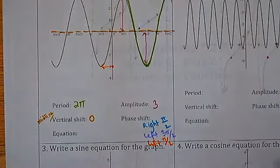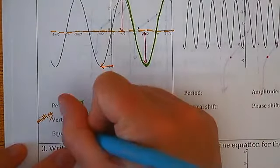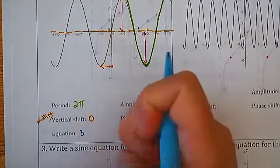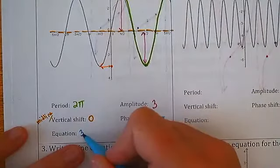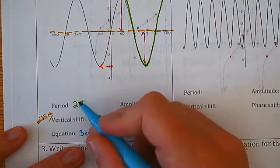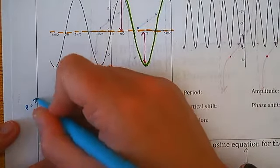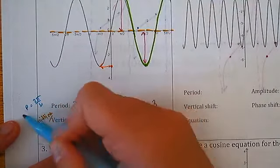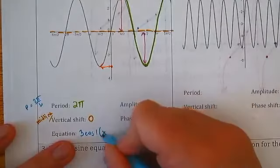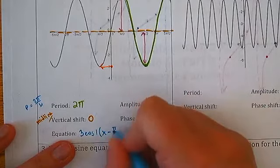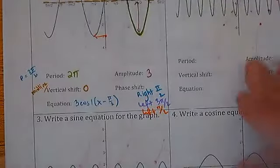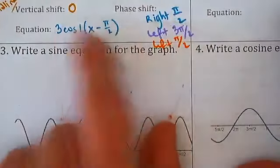Let's put this together as one equation, starting with going right π/2. This is a cosine graph, amplitude is 3. The b value: do not put 2π. The period equals 2π/b, and if the period is 2π, then 2π divided by what equals 2π? One. So b equals 1. In parentheses we have x minus π/2 for the rightward phase shift, plus 0. So the equation is 3cos(x − π/2). That's one option.